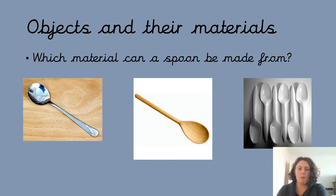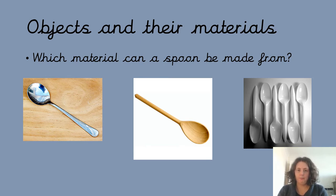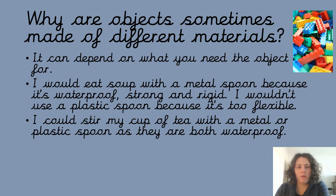If you have a look at the pictures on the slide, we have three different types of spoon and each spoon is made of a different material. We've got a metal spoon, a wooden spoon, and a plastic spoon. All of these are spoons but they're all made of different things, and sometimes that's because they're used for different tasks and different jobs. I would choose a spoon based on what I was going to be using it for.